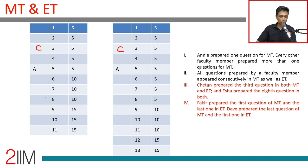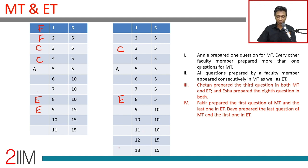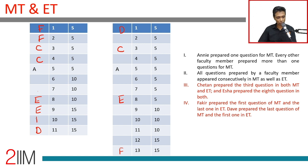Isha prepared the eighth question in both MT and ET. Fakir prepared the first question of MT and the last one in ET. Dave prepared the last question of MT and the first one in ET. So the sequence for MT works out as: F, F, C, C, A, B, B, E, E, D, D — and the ET grid is similarly filled with Dave first and Fakir last.